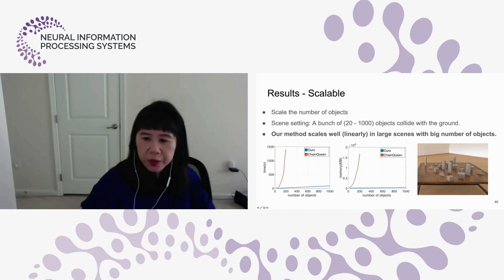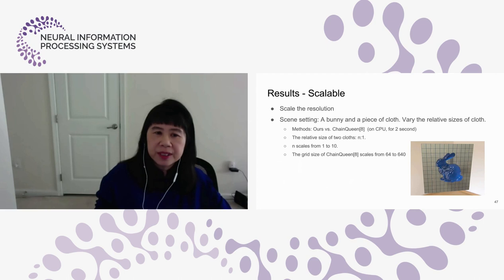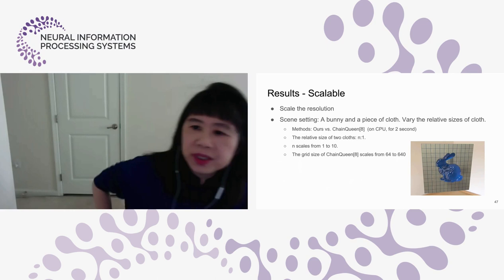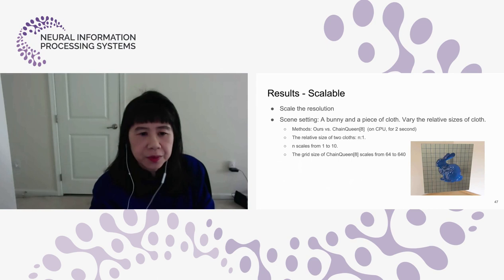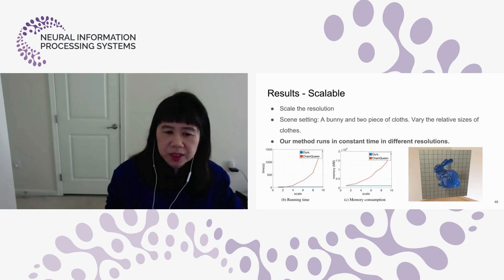In a benchmark scenario of a bunny with a piece of cloth draping over it, we tested with varying cloth sizes and mesh resolutions. Our system's running time scales linearly, whereas the Chained Queens system appears to have quadratic running time. This is largely due to our formulation focusing on sparse contact handling, so the system depends on the actual number of collisions rather than the quadratic potential number of interactions.